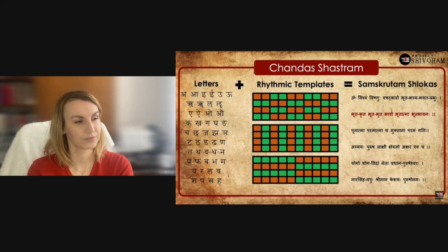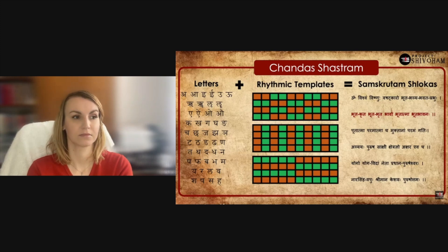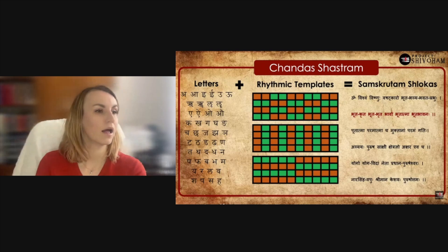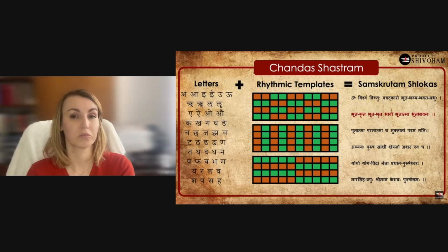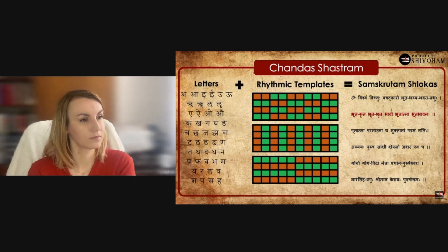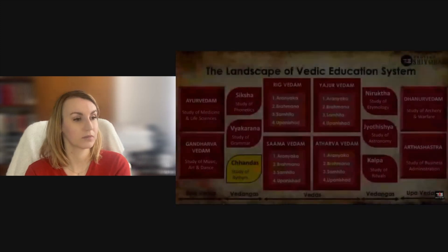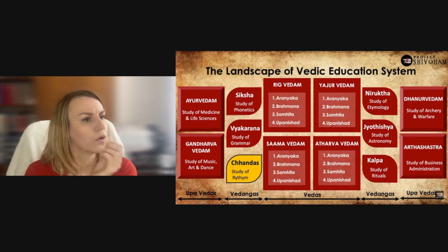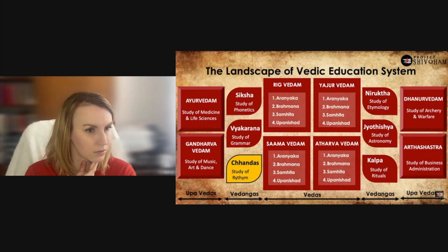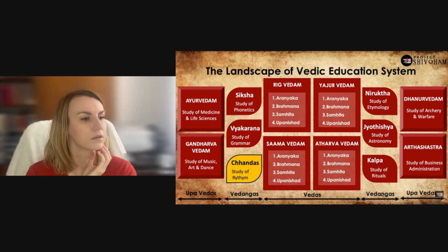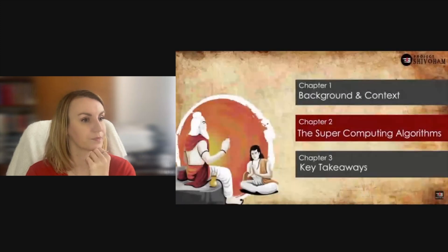The subject that governs this entire process is called Chandash Sastram. It heavily deals with creation of word combinations to fit into rhythmic templates to produce Sanskrit shlokas, making them easy to recite, memorize, and recall. Our main interest is that while picking letters and creating word combinations that fit exactly into rhythmic templates, there is heavy and advanced mathematics involved — as part of Chandash Sastram. It is a Vedanga that gives linguistic rhythm, making Vedic subjects easily memorizable without needing to carry a book.